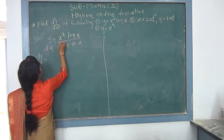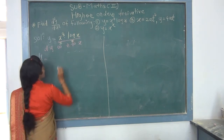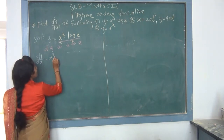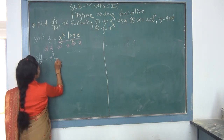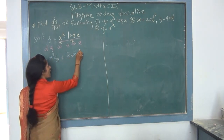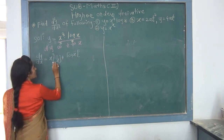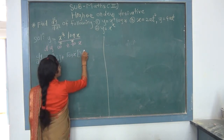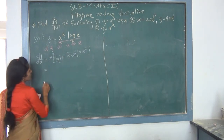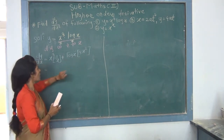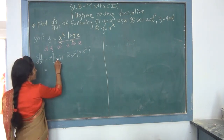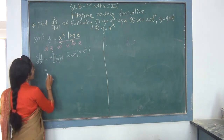Since we need the second order derivative, we differentiate dy/dx = x²(1 + 3·log(x)) again with respect to x. The left-hand side gives d/dx of dy/dx, which is d²y/dx². On the right-hand side, we again have two functions in multiplication: x² as the first function and (1 + 3·log(x)) as the second function, so we apply the product rule again.